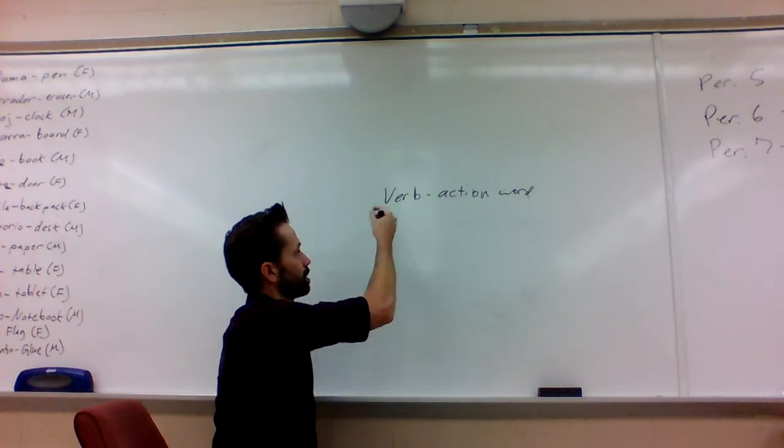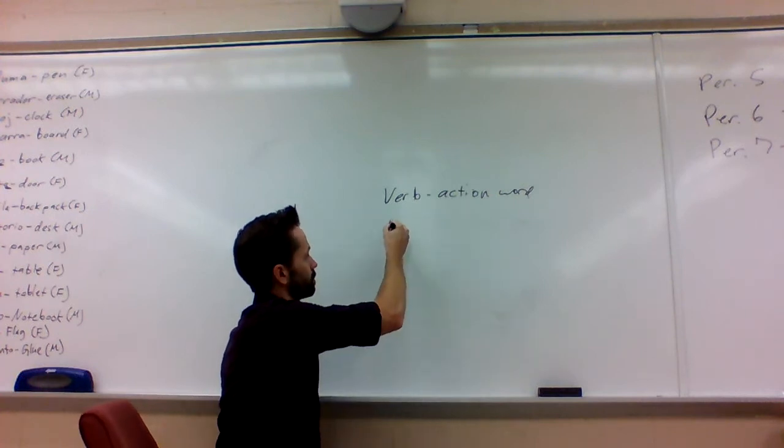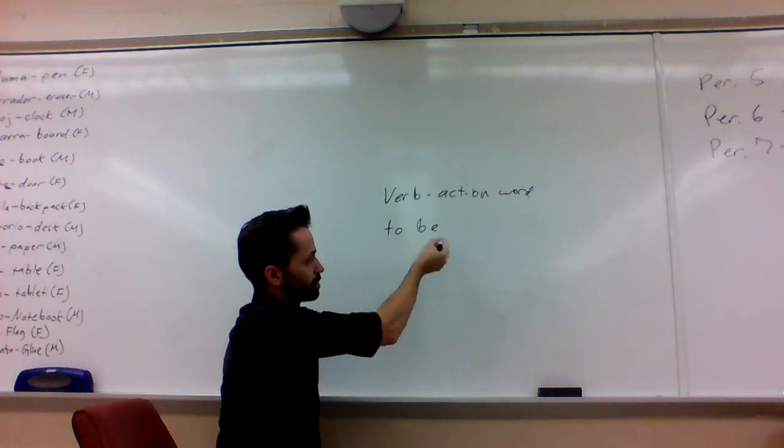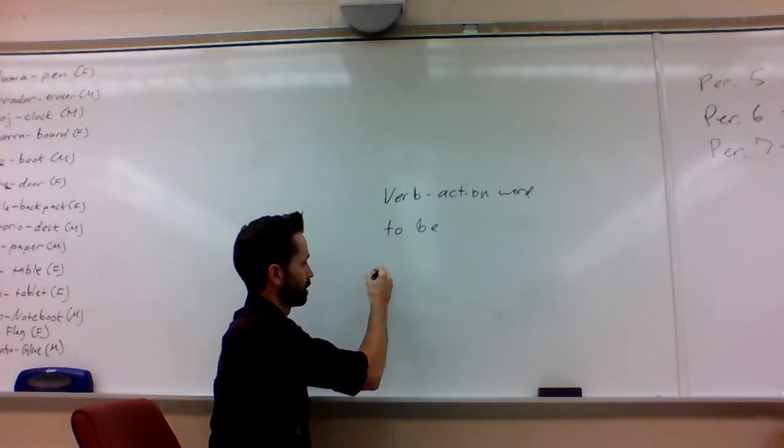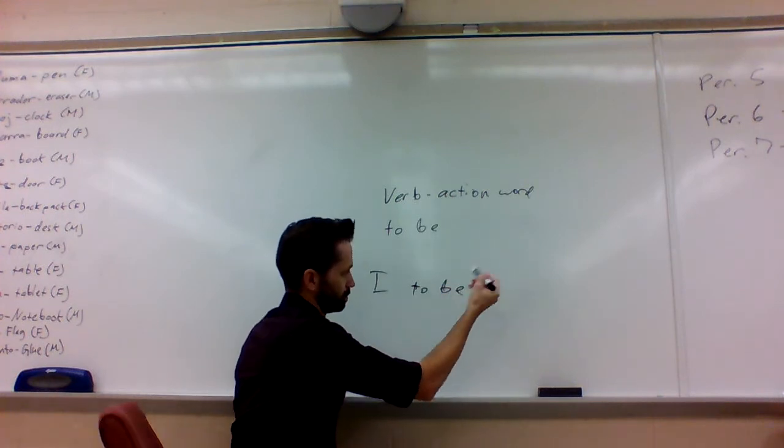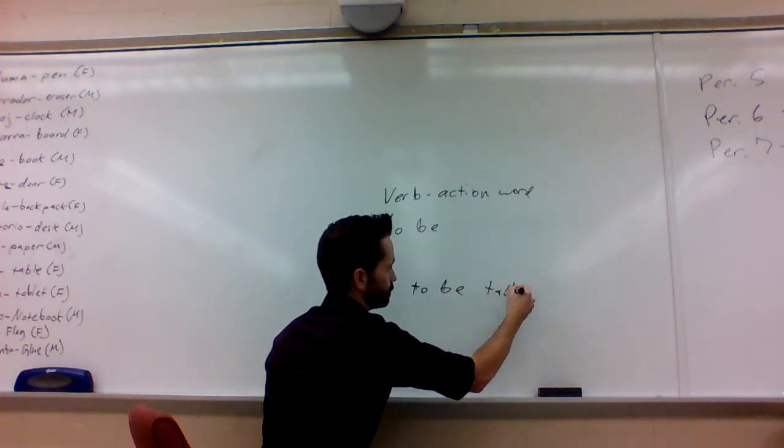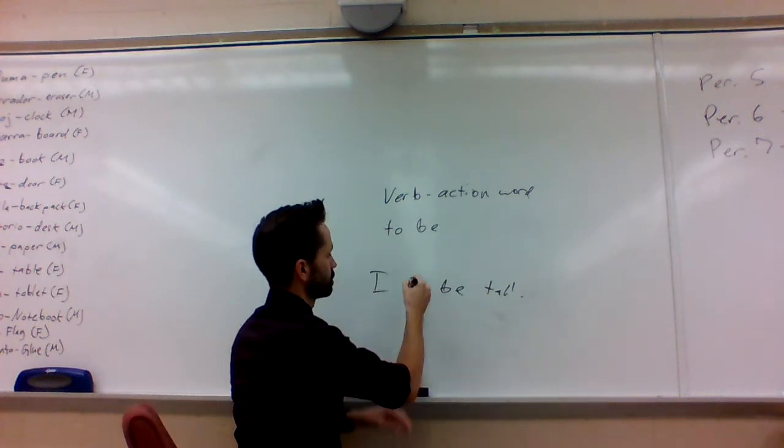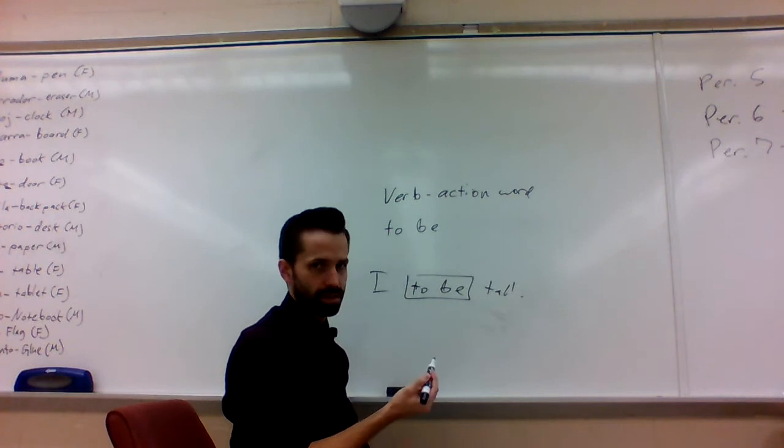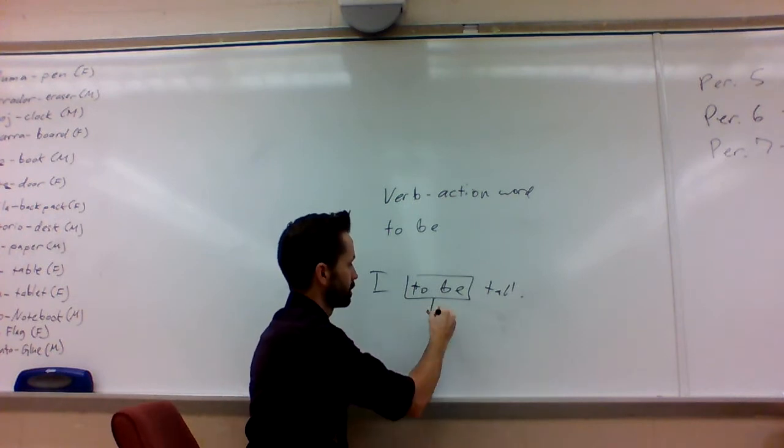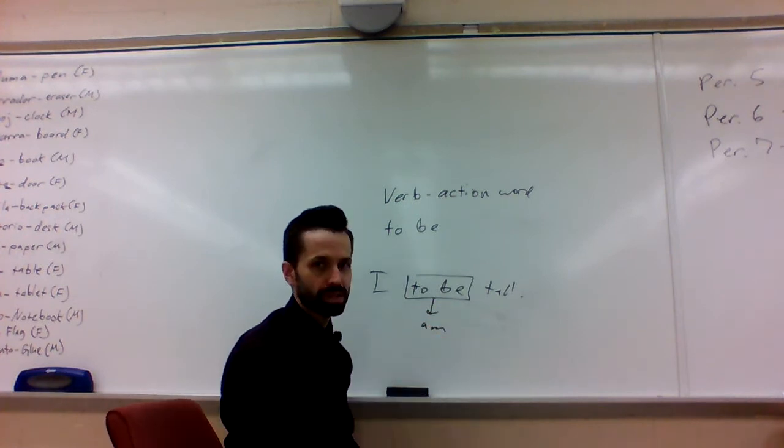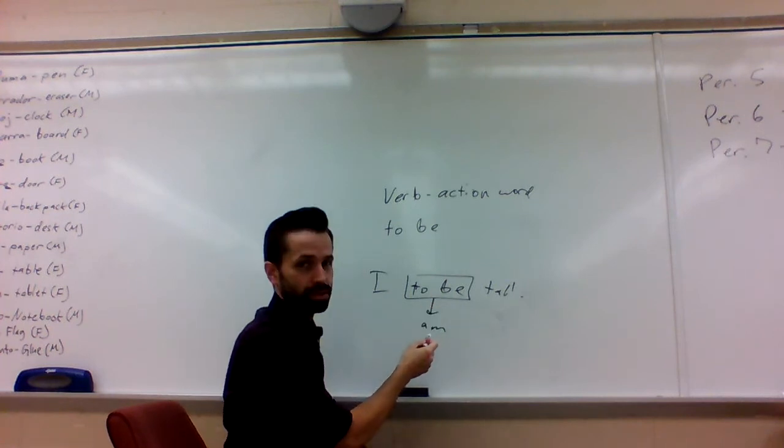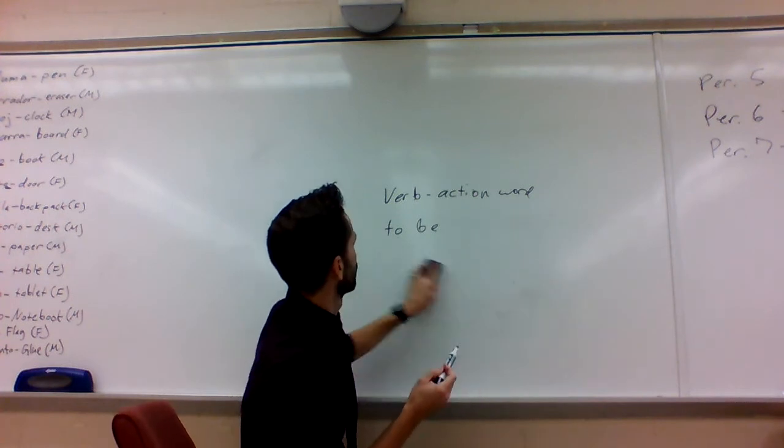So for example in English you have a word like 'to be.' You can't just throw this into a sentence like 'I to be tall.' This sounds really weird and you can't just do that. So in order to use this you need to change this basic form of this verb into something like 'am' to be able to use it. Changing 'to be' to 'am,' this process is called conjugation. So let's write that down.